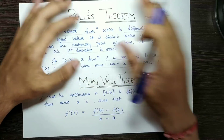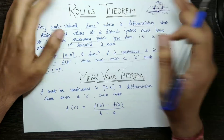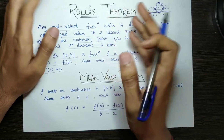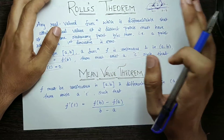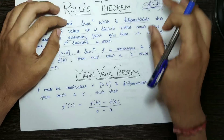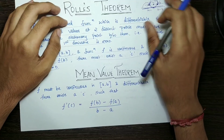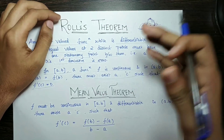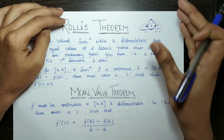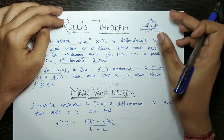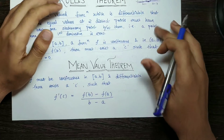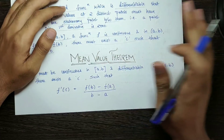If you have these conditions, you can find the derivative, set it equal to zero, and solve. That is very important. Even if you don't have a strong mathematics background, as long as you can differentiate, you can apply this theorem. The theory is very straightforward and easy.